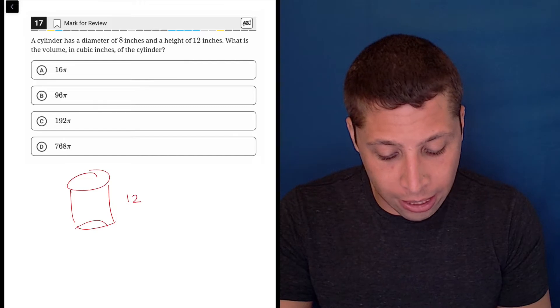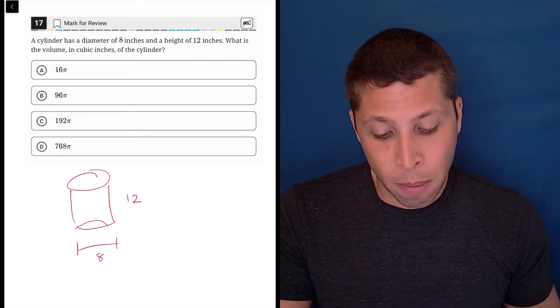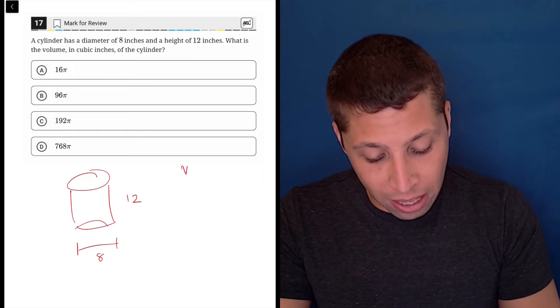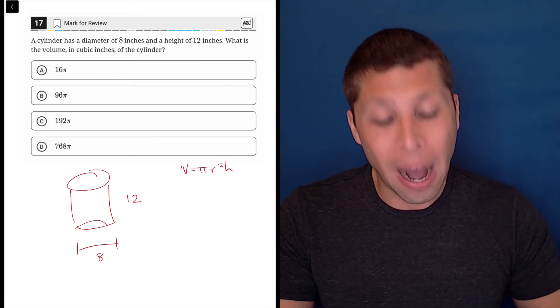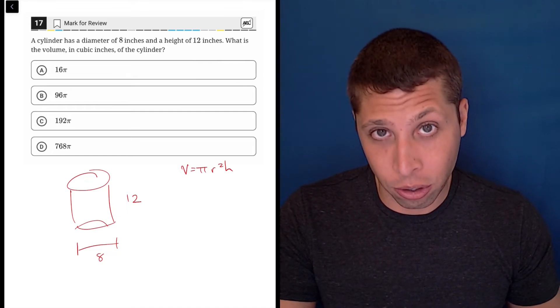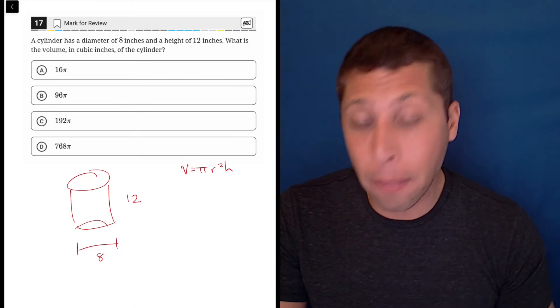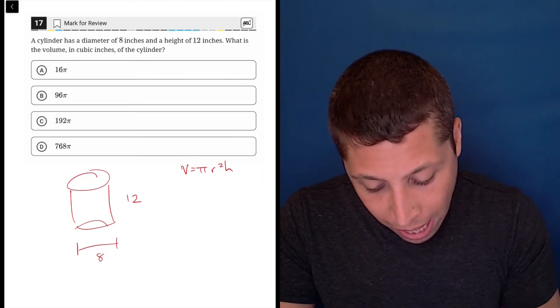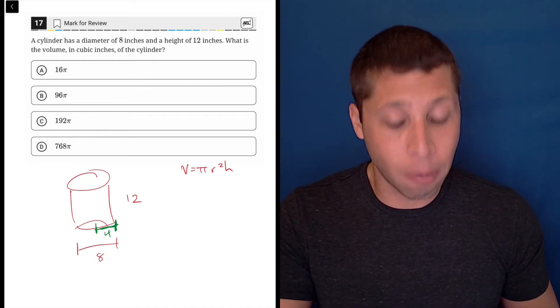We're told that the height is 12 inches and that the diameter is 8, but if we use the reference chart or if we just have it memorized, we know that the volume of a cylinder is πr²h, so the volume is dependent on the radius. We're given a diameter of 8, we don't care about that. We actually care that the radius is 4. That's the number we're going to use.